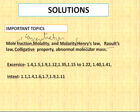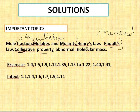Raoult's law — numericals will definitely come from both Henry's law and Raoult's law. In Raoult's law, you have to learn about positive and negative deviation in ideal and non-ideal solutions. The most important part is colligative properties, which depend on the number of solute particles. The four colligative properties are osmotic pressure, depression in freezing point, elevation in boiling point, and relative lowering of vapour pressure. Depression in freezing point and elevation in boiling point are the most important, and numericals will definitely come on these topics.